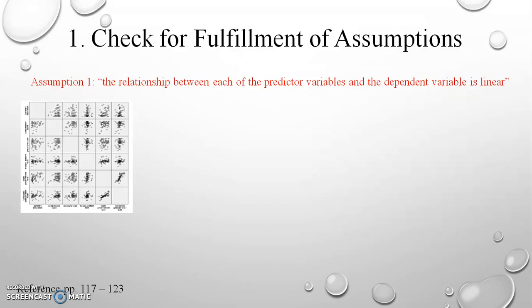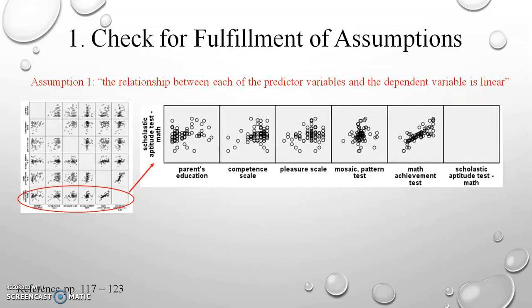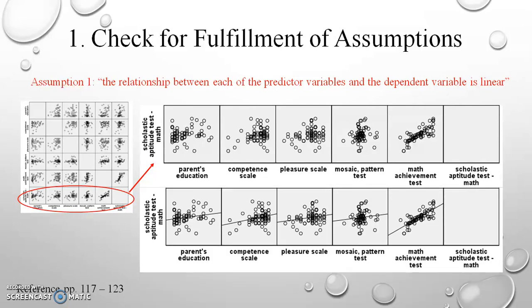Let's take a closer look at the very last row of this matrix. Here we can see all five independent variables on the x-axis and our dependent variable on the y-axis. I added a regression line to the scatter plot matrix to help determine linearity. A quick visual inspection reveals that a straight line, as opposed to a curved line, fits the points between the dependent and independent variables nicely, so the first assumption is fulfilled.